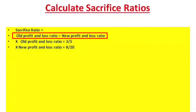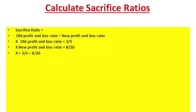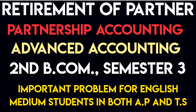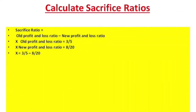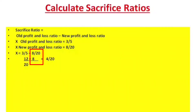Old profit and loss ratio minus new profit and loss ratio: 3 by 5 minus 8 by 20. Finding the common denominator — LCM is 20. So 3/5 becomes 12/20. Then 12 minus 8 equals 4 by 20. X's sacrifice ratio is 4 by 20.